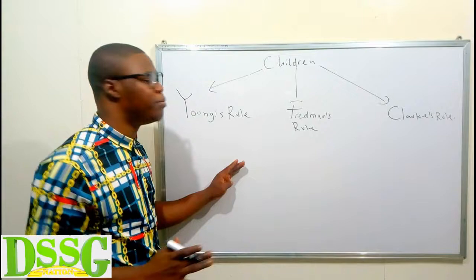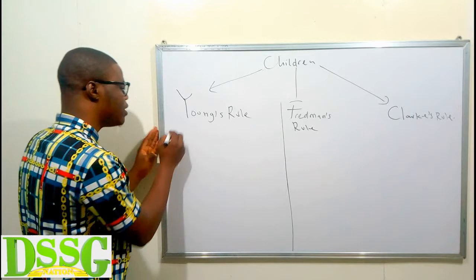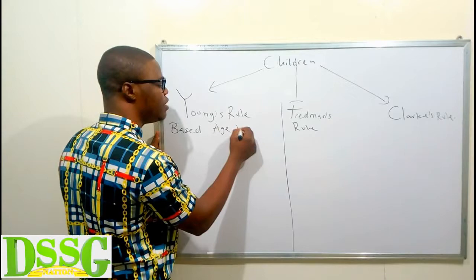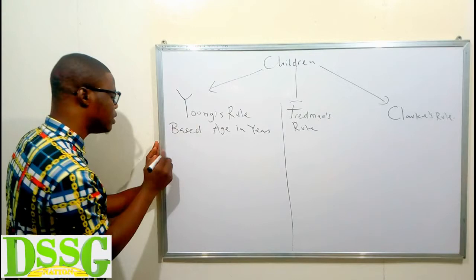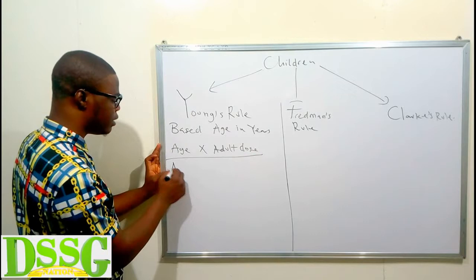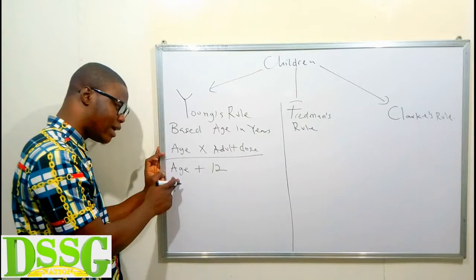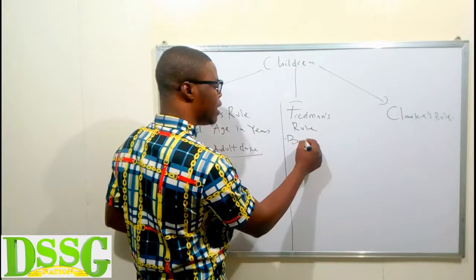Each of these methods has its own formula. The first one is Young's Rule. Young's Rule calculates dosage based on the child's age in years. The formula for Young's Rule is: age in years multiplied by the adult dose, all over age in years plus 12.